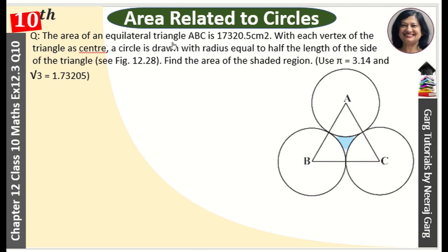The area of an equilateral triangle ABC is 17320.5 cm². With each vertex of the triangle as center, a circle is drawn with radius equal to half the length of the side of the triangle. See figure 12.28, find the area of shaded region. Use pi equals 3.14 and root 3 equals 1.73205.